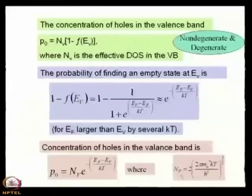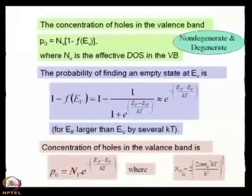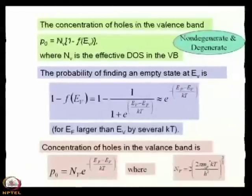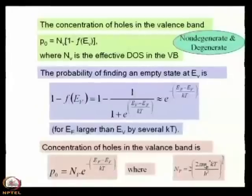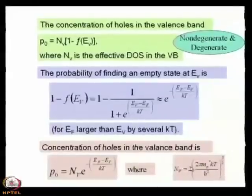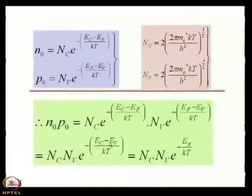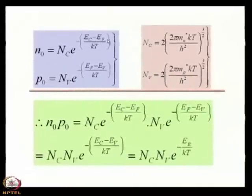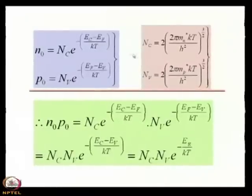This N_v expression is the same as the density of states in the conduction band, except that there the effective mass was for electrons, and here the effective mass is for holes — that is the only difference. So we have derived two expressions: N₀ = N_c × e^(-(E_c - E_f)/kT) and p₀ = N_v × e^(-(E_f - E_v)/kT), where N_c and N_v are given by those expressions.